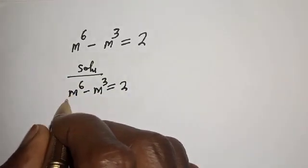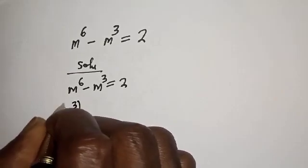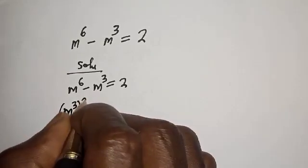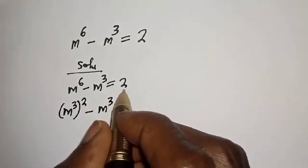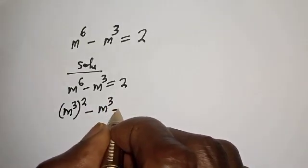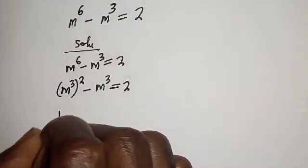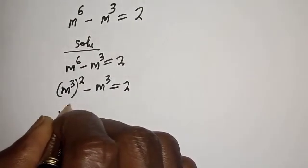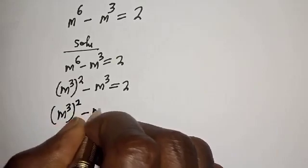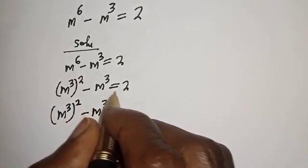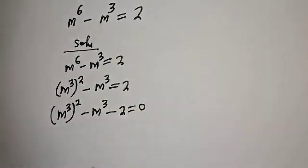Then m raised to power 6 can be written as m raised to power 3, to the power of 2, minus m raised to power 3 is equal to 2. Here is m raised to power 3 to the power of 2 minus m raised to power 3. Let's bring this 2 to this side: minus 2 is equal to 0.